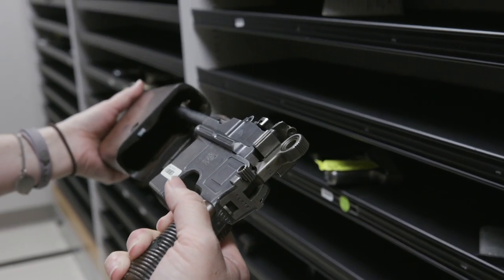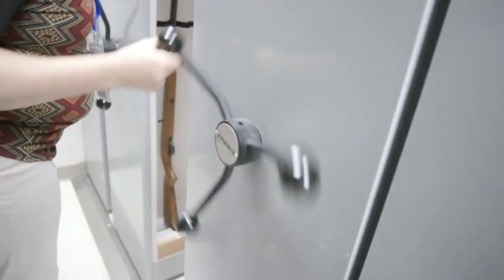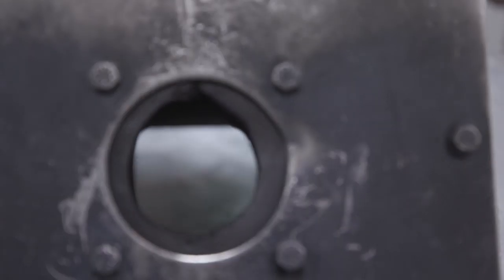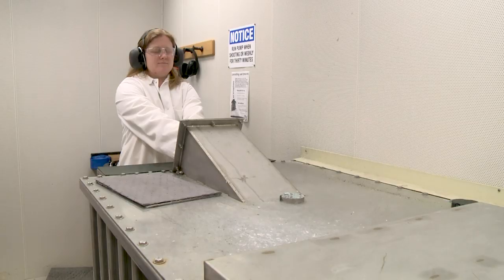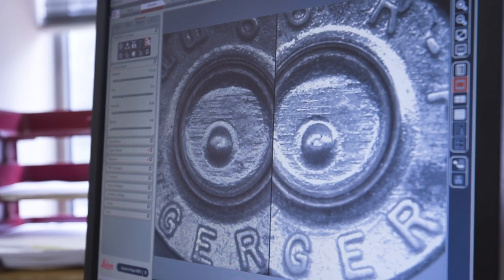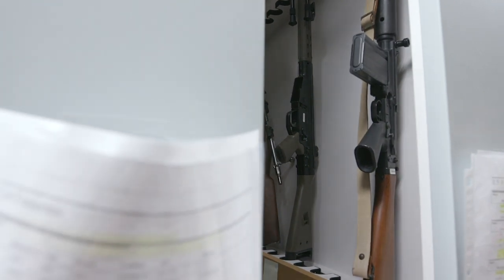The firearms investigation lab maintains over 900 gun models on site which can be used to compare against those suspected in crimes, utilizing ballistic tank measurements and microscopic analysis to reveal the make and model of firearms used whether recovered or not.